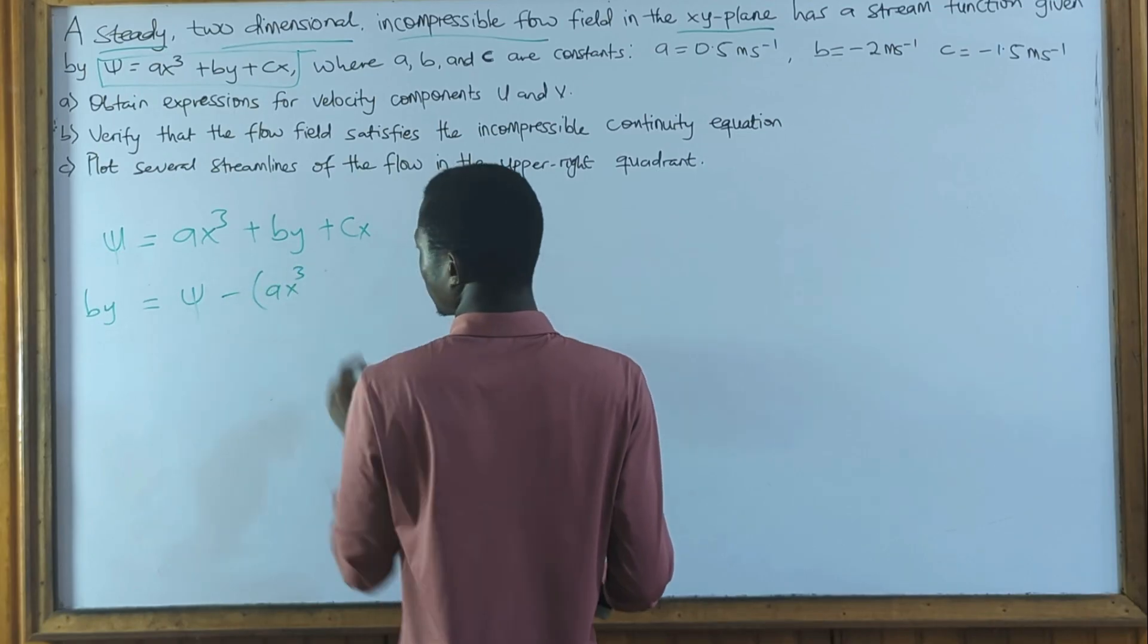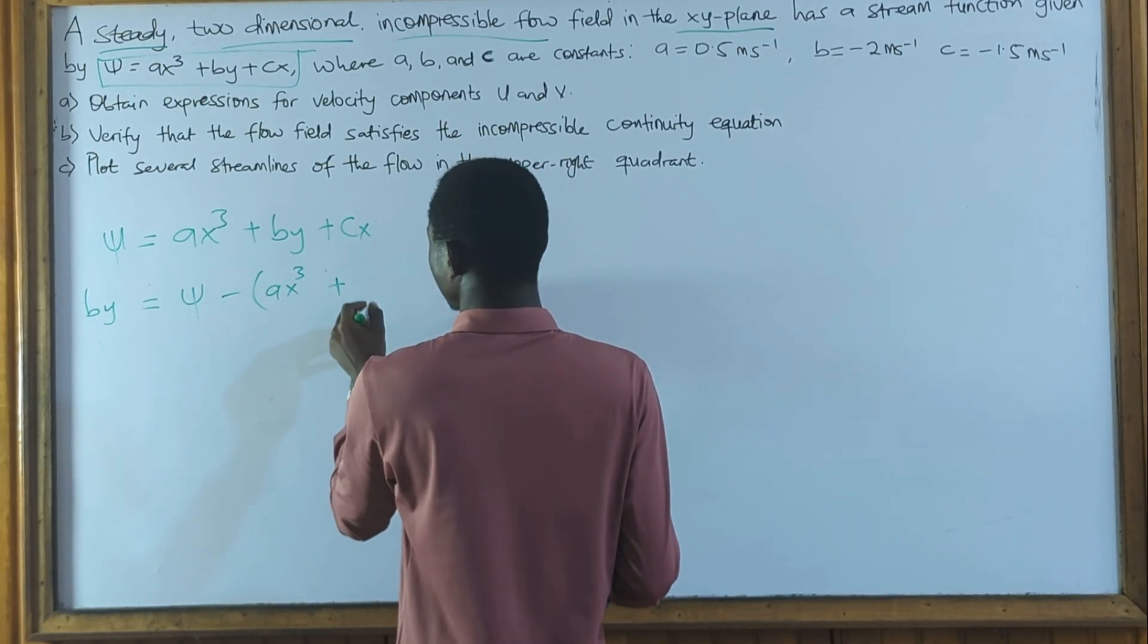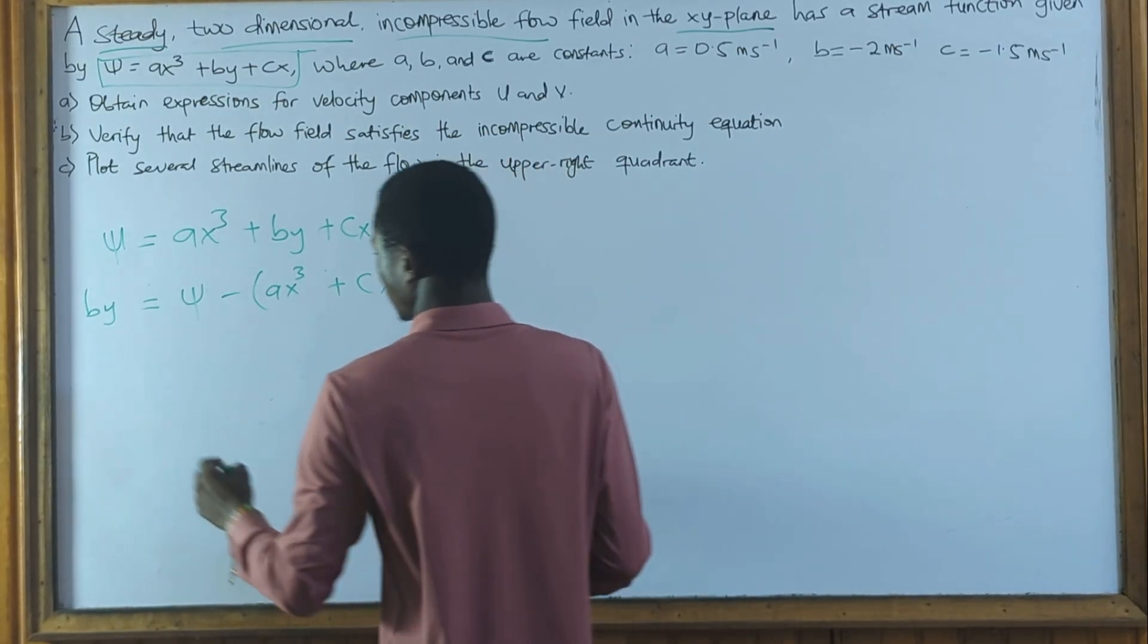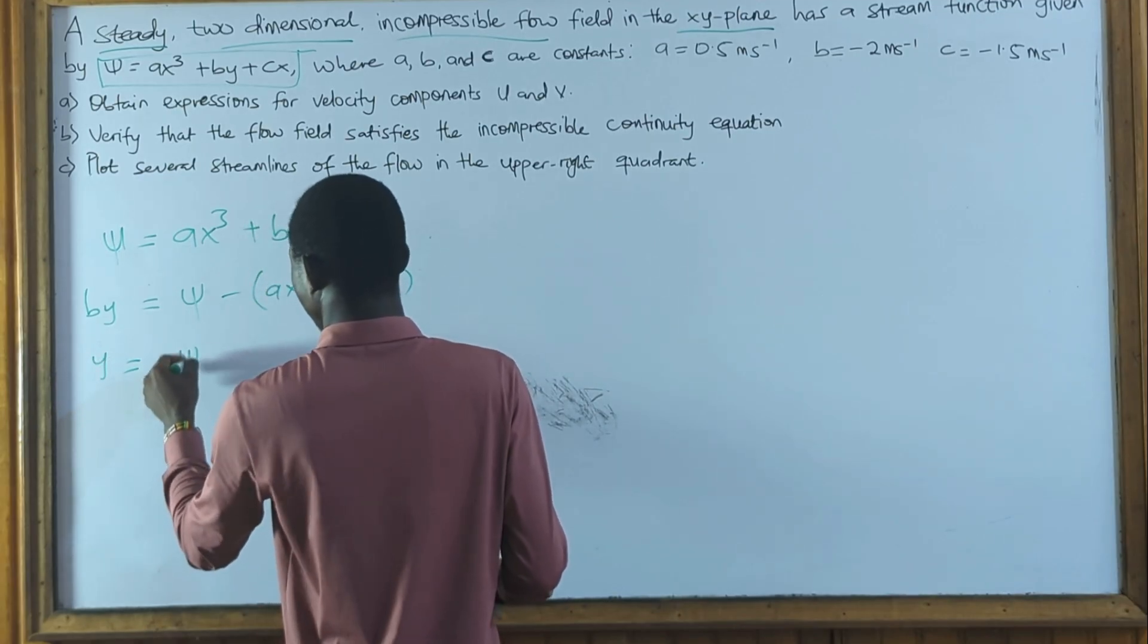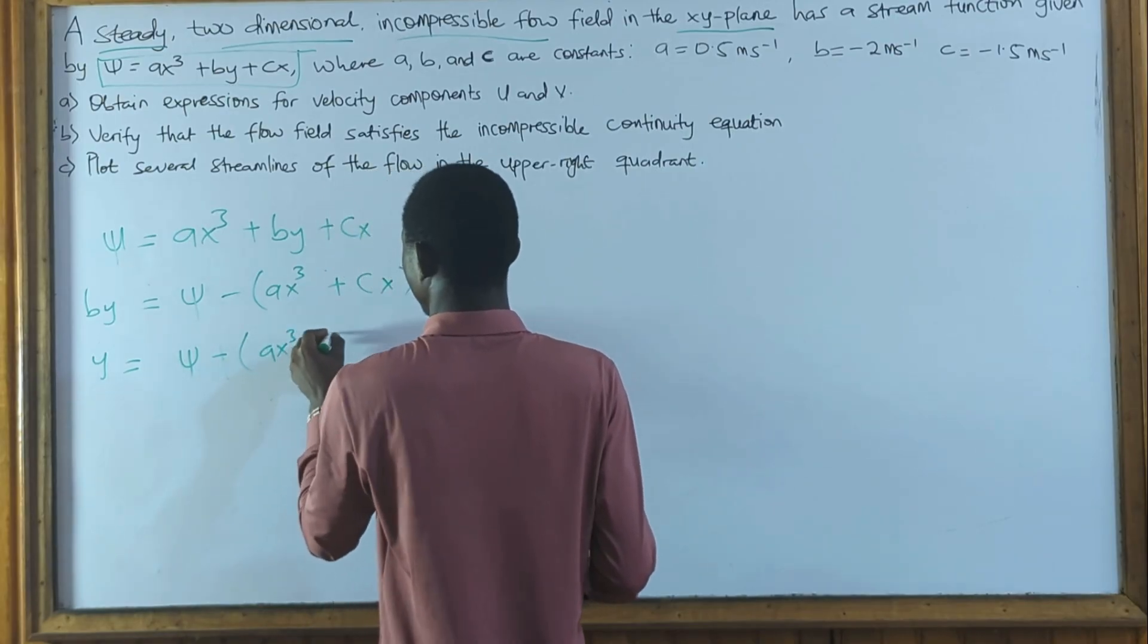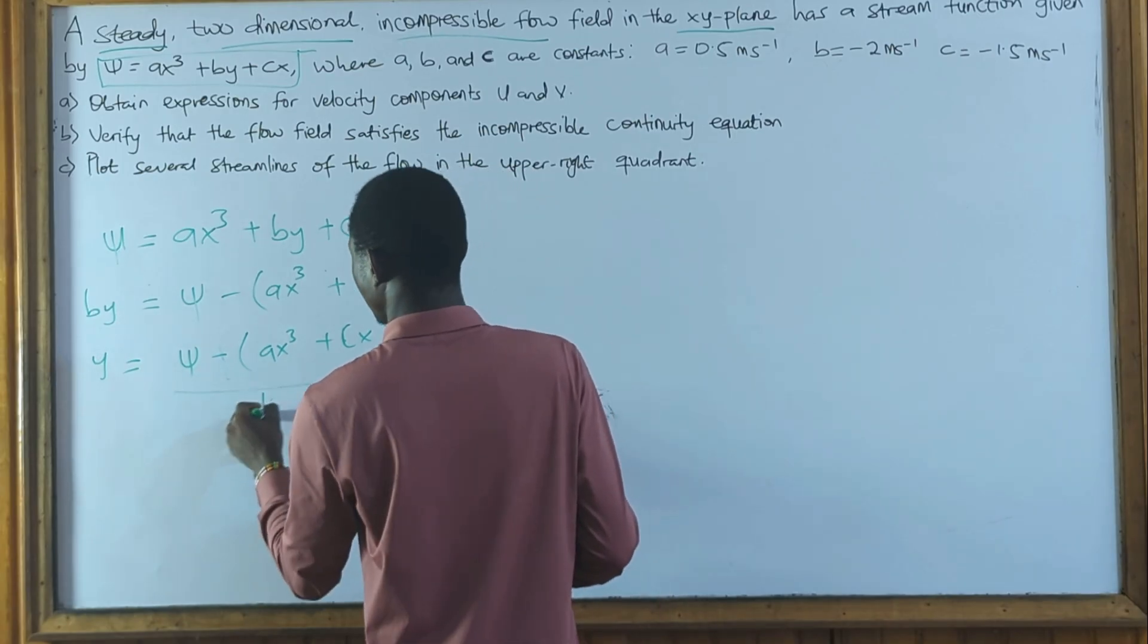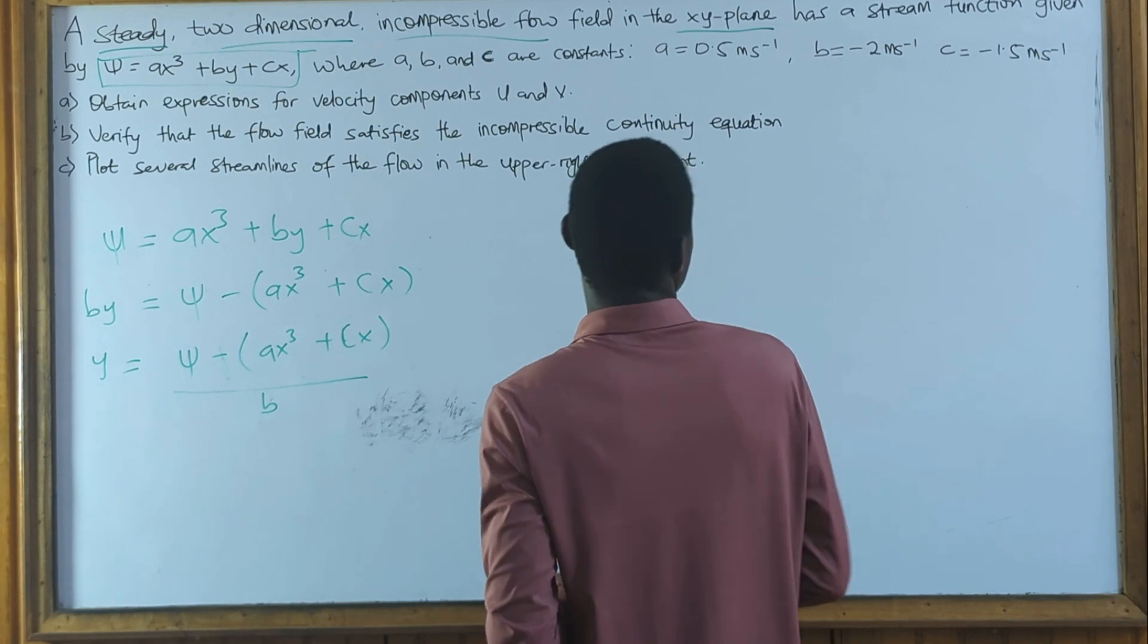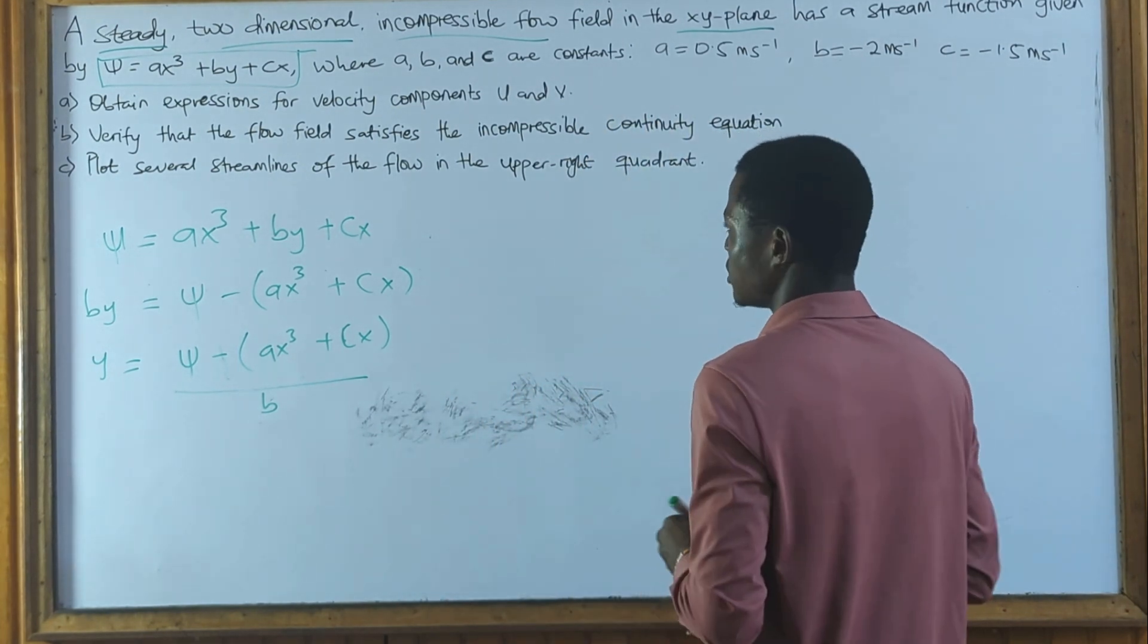So we have by = ψ - ax³... ax cubed, sorry... plus cx. So we are going to get y = (ψ - (ax³ + cx)) / b. So this is what we are going to get.